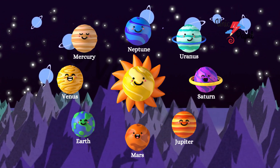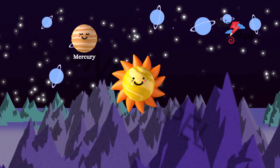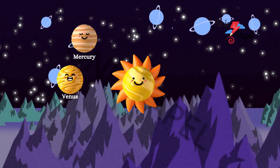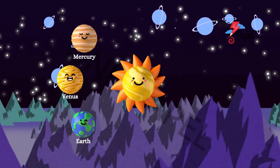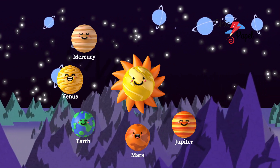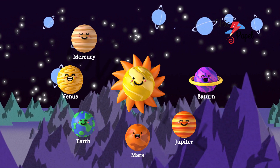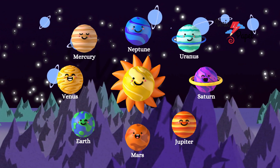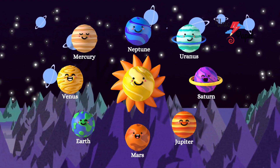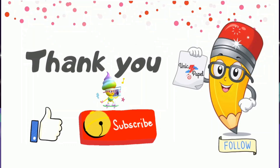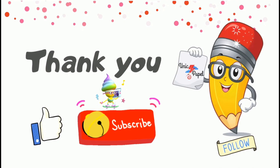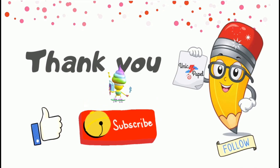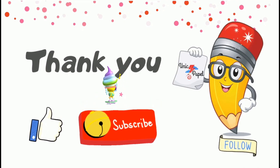Yes! In order: Mercury, Venus, Earth, Mars, Jupiter, Saturn, Uranus, Neptune. These are the 8 planets around the Sun. Bye-bye!